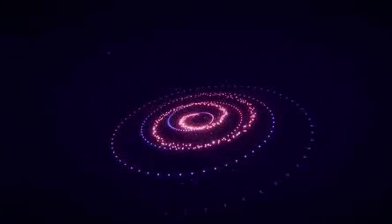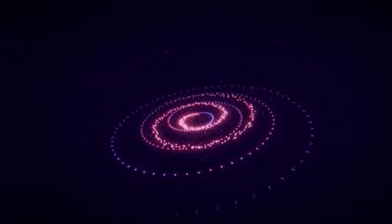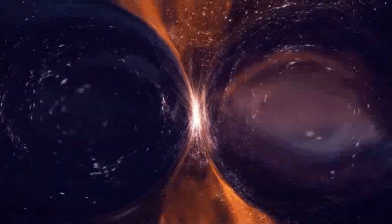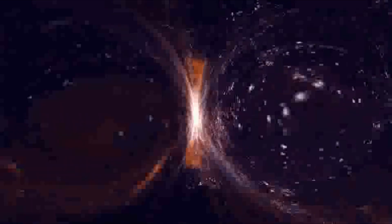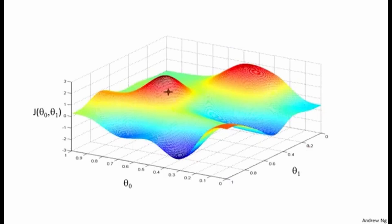Statistical entropy can be calculated using the formula S = k·ln(W), where S is entropy, k is Boltzmann's constant, ln is the natural logarithm, and W is the number of states.